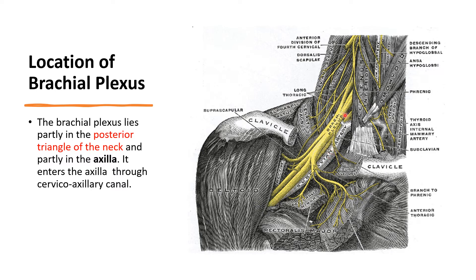Brachial plexus enters the axilla from the posterior triangle of the neck through a canal known as the cervico-axillary canal, which is bounded anteriorly by the clavicle, medially by the first rib, and posteriorly by the upper border of the scapula.